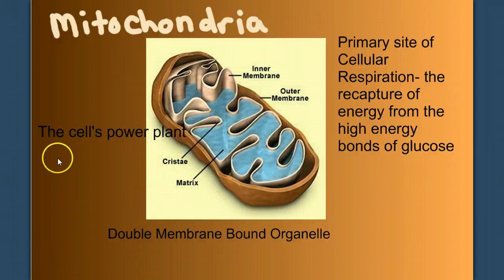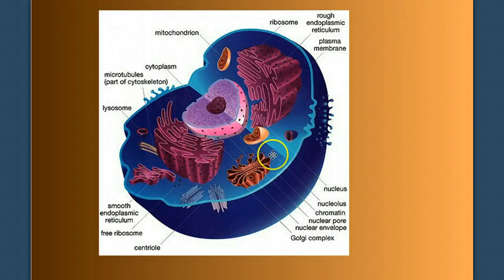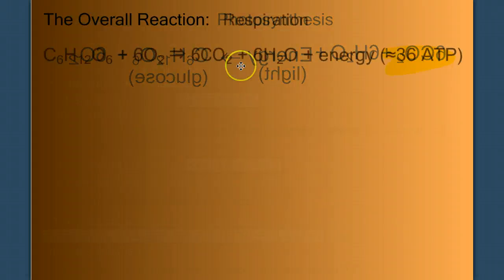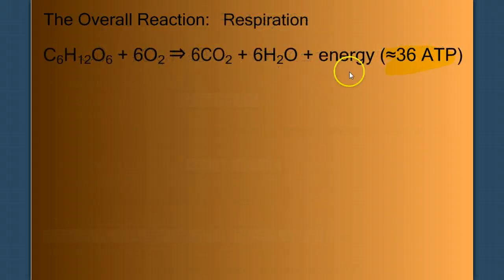We'll come back to the mitochondria later because the first stage of respiration, glycolysis, occurs out here in the cytoplasm. Now let's keep in mind what it is we're trying to do. We're trying to make ATP. So we need to talk about how ATP is actually made.